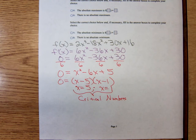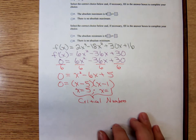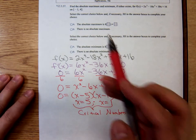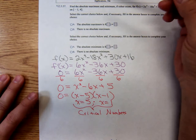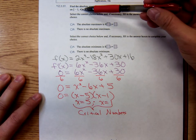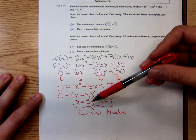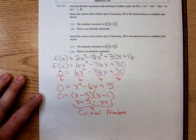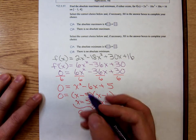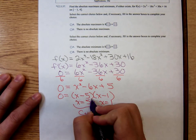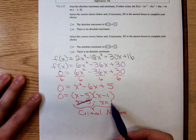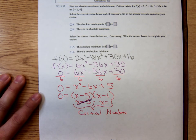However, one of those is not in the specified interval. We're told we're only concerned about the interval from negative 1 to 4. The value 5 is not between negative 1 and 4 inclusive, so we discard 5. The only critical number we have to worry about is 1.